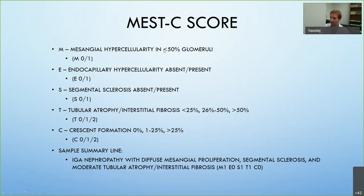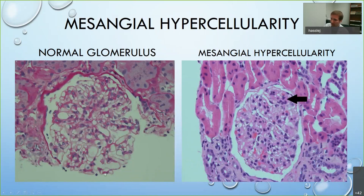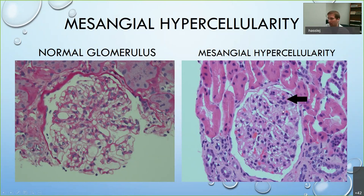Mesangial hypercellularity — showing a normal glomerulus for comparison — means there are too many cells within the mesangial compartment. There should be three cells or less. In an abnormal example I can count at least six cells — this is one of the hallmarks of IgA nephropathy. Usually if I see this in any biopsy, even before immunofluorescence, it's probably going to be IgA nephropathy. I then have to count all glomeruli to see how many show this feature.